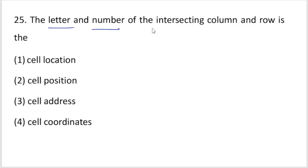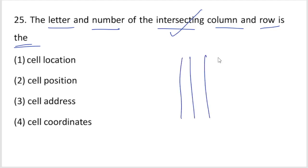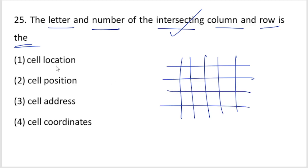The letter and number of the intersecting column and row — what is that called? In a spreadsheet, the intersection of a column letter and row number is called the cell location or cell address. Option one, cell location, is your right answer.